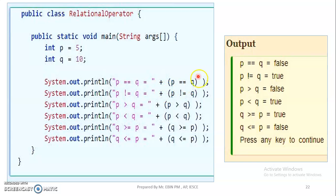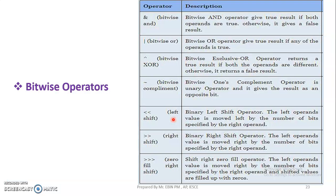Next is bitwise operators. Bitwise operators handle bits — binary numbers. The operations are: AND operation, OR operation, XOR operation, complement, left shift, right shift, and zero-fill right shift. These are the bitwise operators.